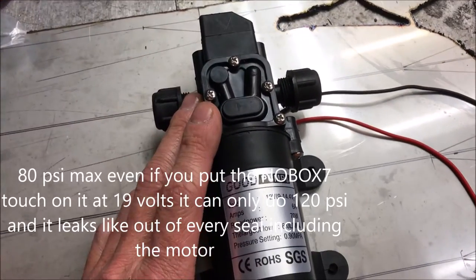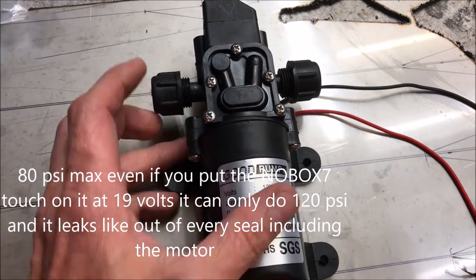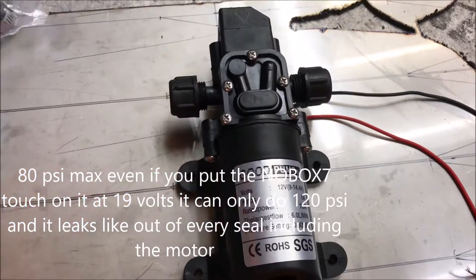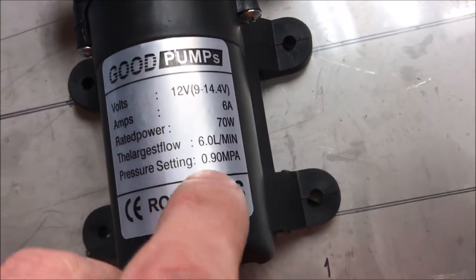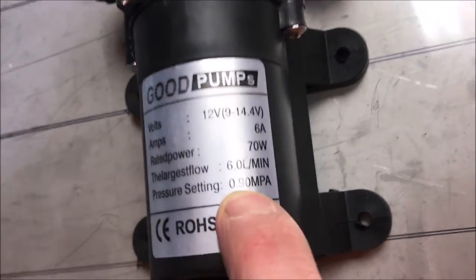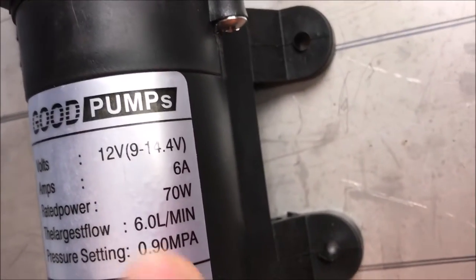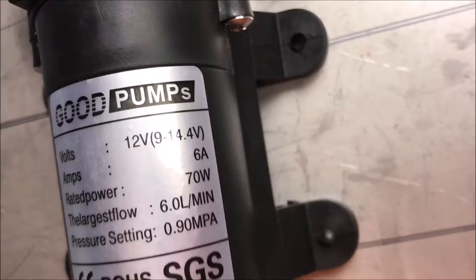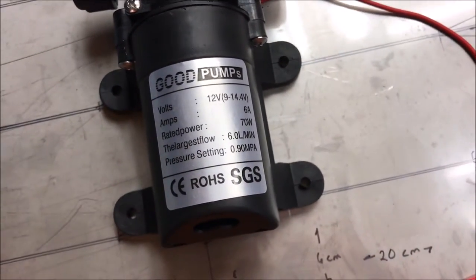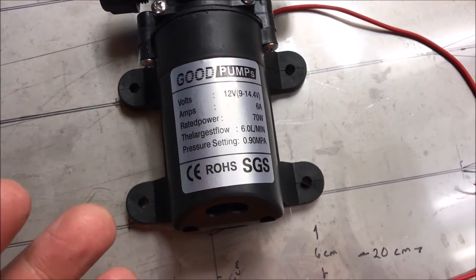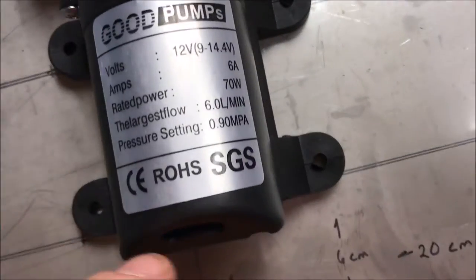Chinese manufacturers are flat out liars. They'll have right in their description 160 PSI pump, then you look in the picture and it clearly shows 0.4 megapascal. This one's 0.9, which is only 130 PSI.